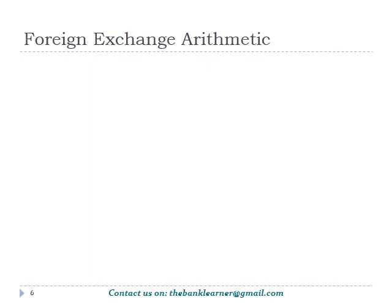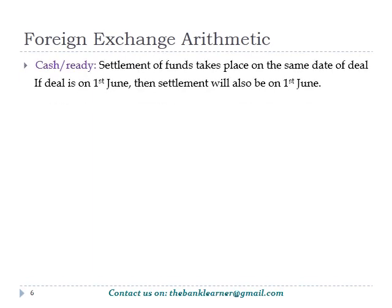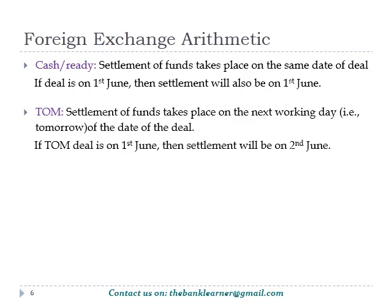Let's see the different value dates. If the settlement of funds is done on the same date of the deal, then it is called cash — that is, if the deal is made on 1st June, then the settlement will also be on 1st June. If settlement happens the next working day of the date of deal, then it is known as term. So, for the same deal, settlement will be on 2nd June, provided it is a working day.